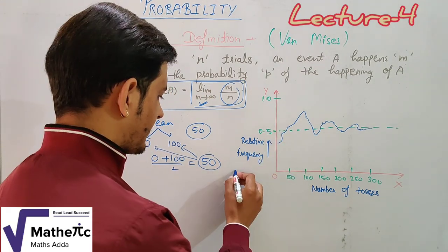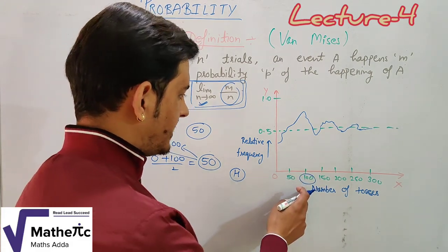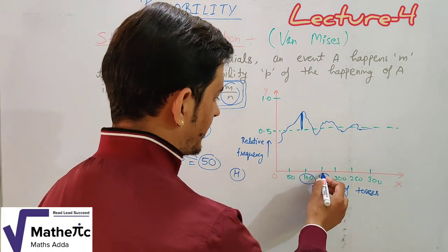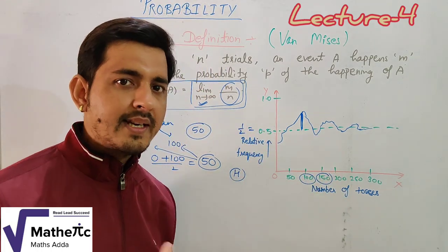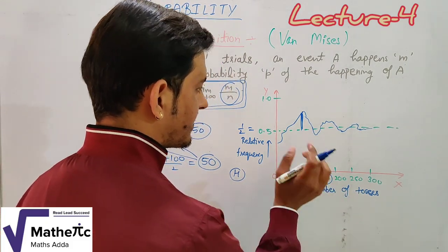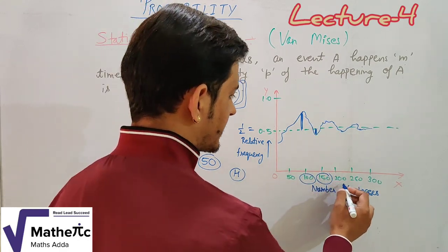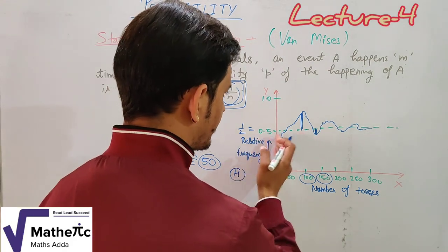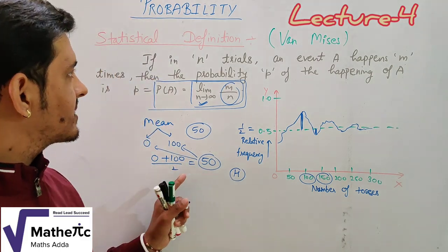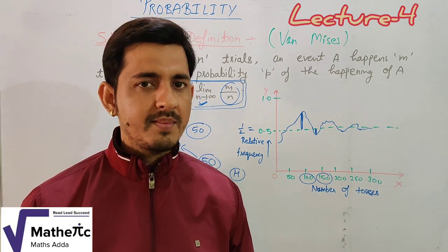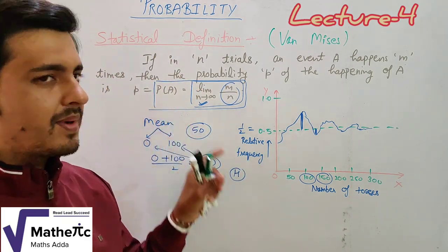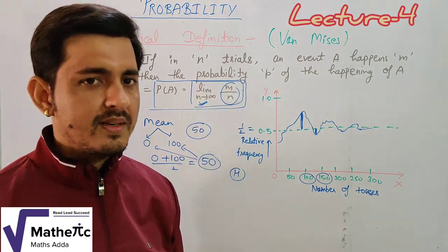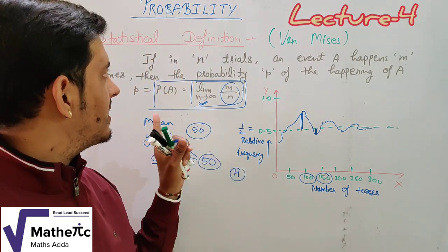Looking at this graph of relative frequency versus number of tosses: when the number of tosses was around 100, the relative frequency of heads was far from 0.5. As we moved to 150 tosses, the distance from 0.5 reduced. By 300 tosses, the relative frequency is almost equal to 0.5. This shows that the probability of heads approaches one-half as the number of trials increases to infinity.